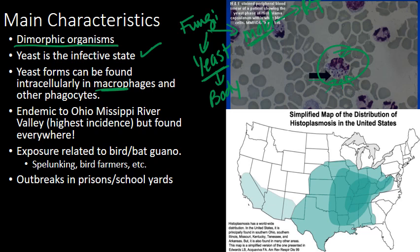Studies have shown you can find Histoplasma all over the world, every continent except Antarctica. But there are places where it's actually expected to be found — it's endemic to the Ohio-Mississippi River Valley. Indianapolis is actually the histo capital of the world. We do see a fair amount of histoplasma in Illinois and Chicago. At Rush, we see anywhere from 5 to 10 histoplasma patients per year, so it's not entirely uncommon.